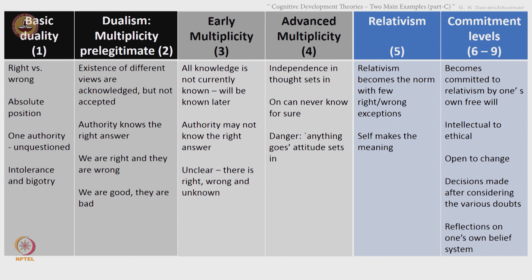The fifth stage is relativism, where relativism becomes the norm. Very few things can be categorized as right or wrong — they are essentially exceptions. Self makes the meaning; this becomes slowly clear to the person. Then commitment levels — stages six to nine — where the person becomes committed to relativism by their own free will, transitioning from intellectual to ethical. The person becomes open to change, makes decisions after considering various doubts, and reflection on one's own belief system also happens.